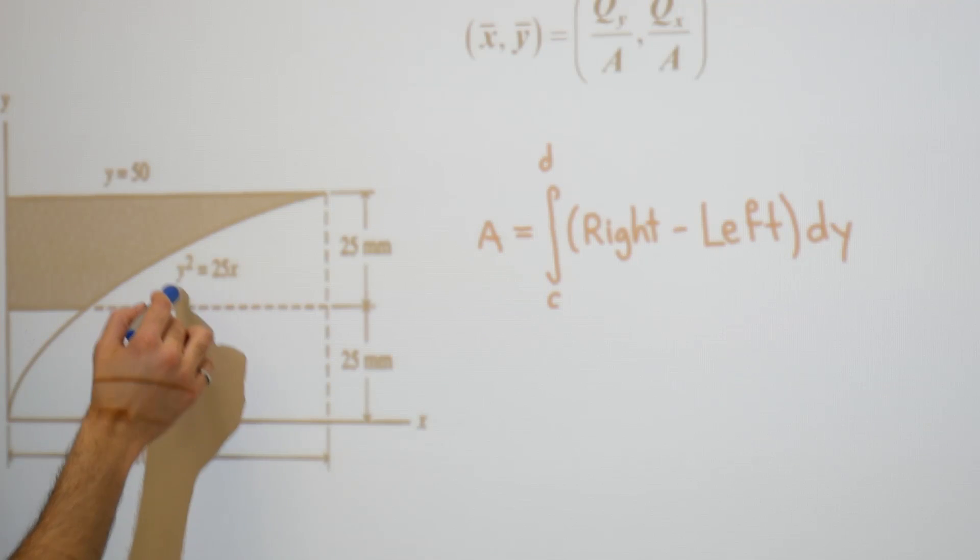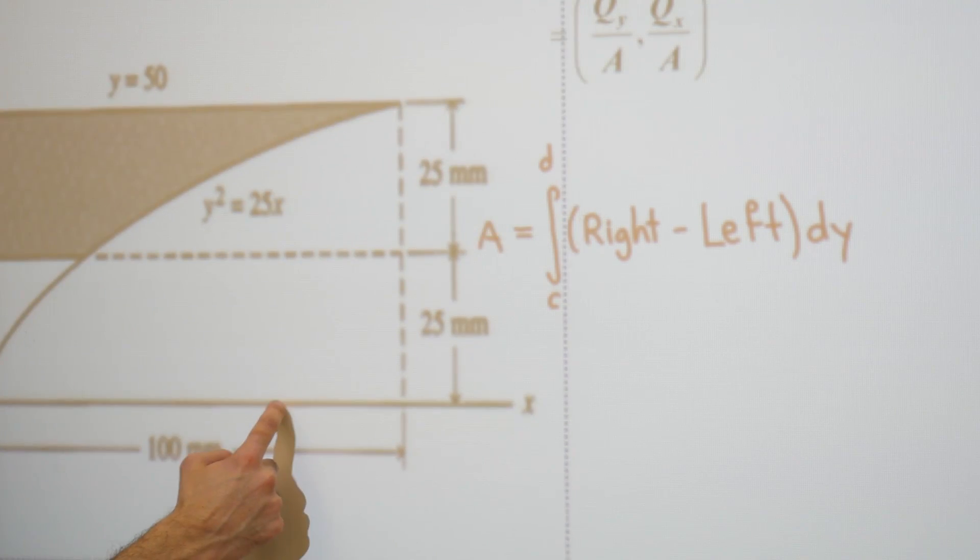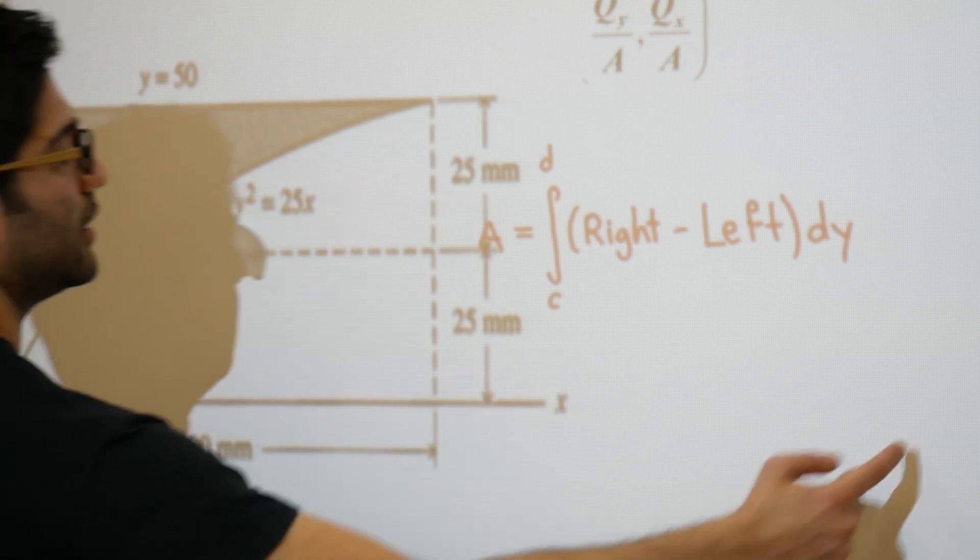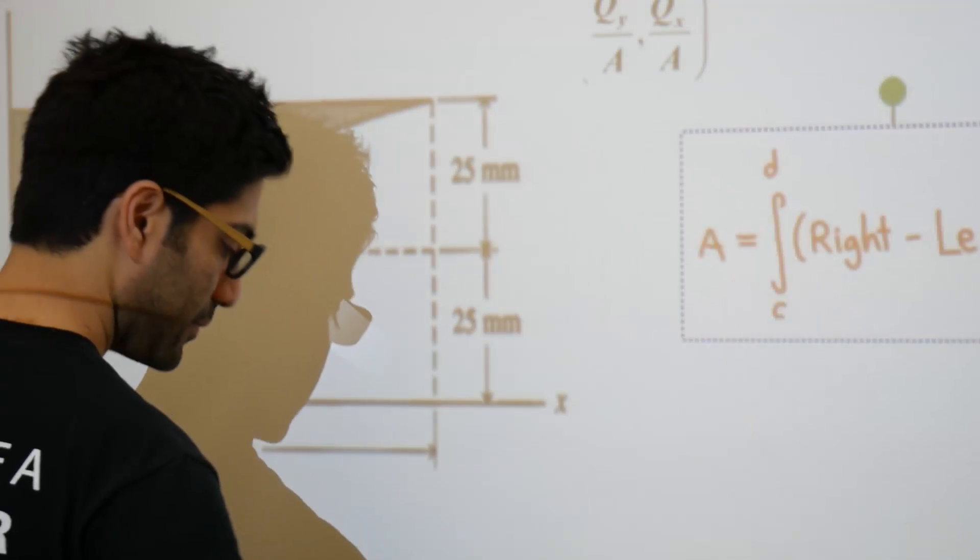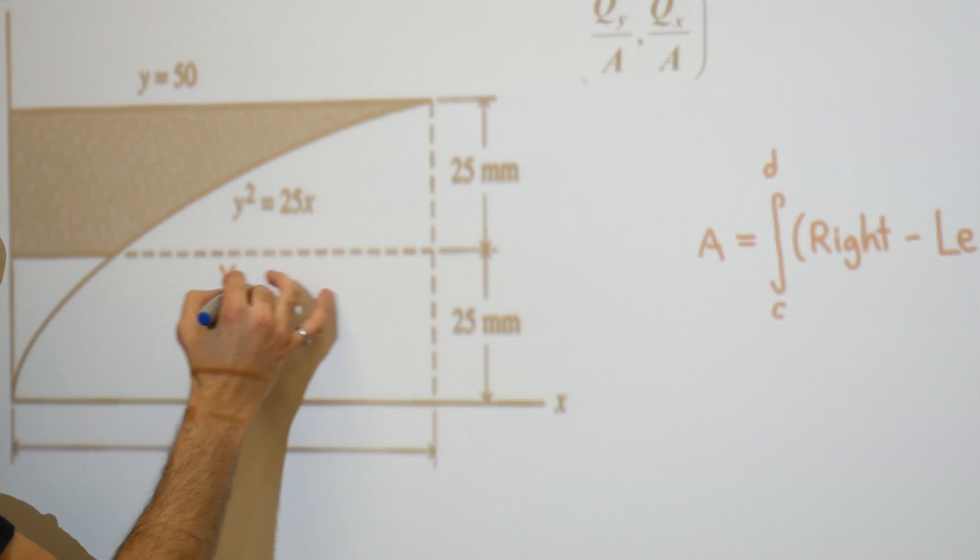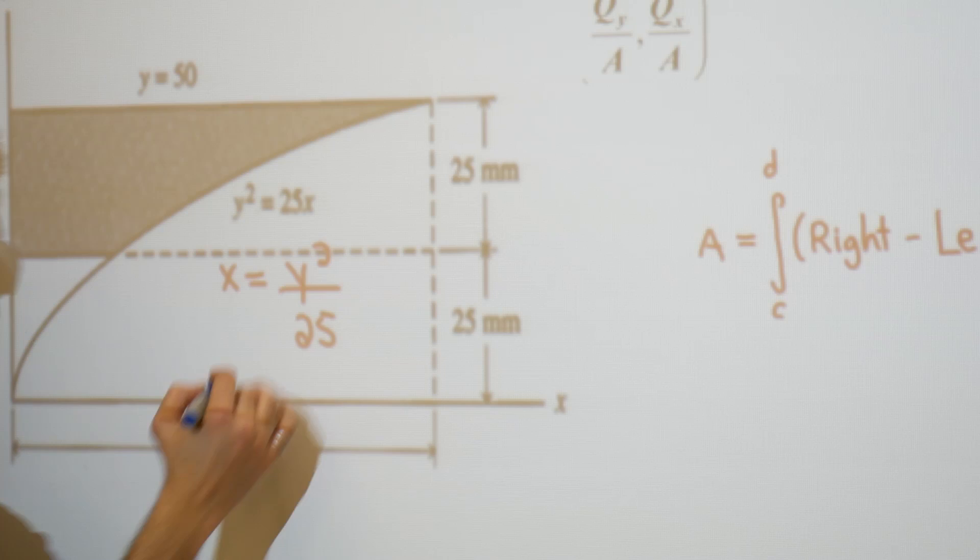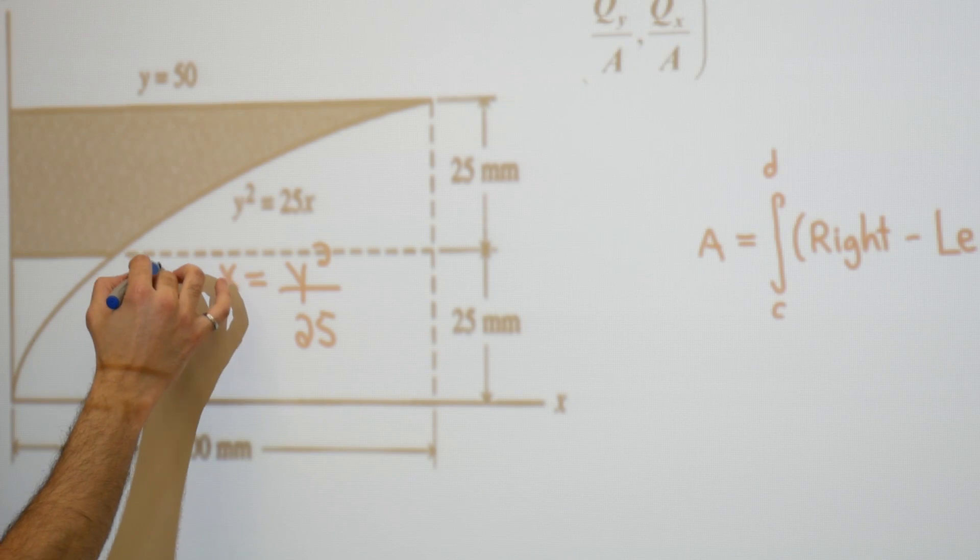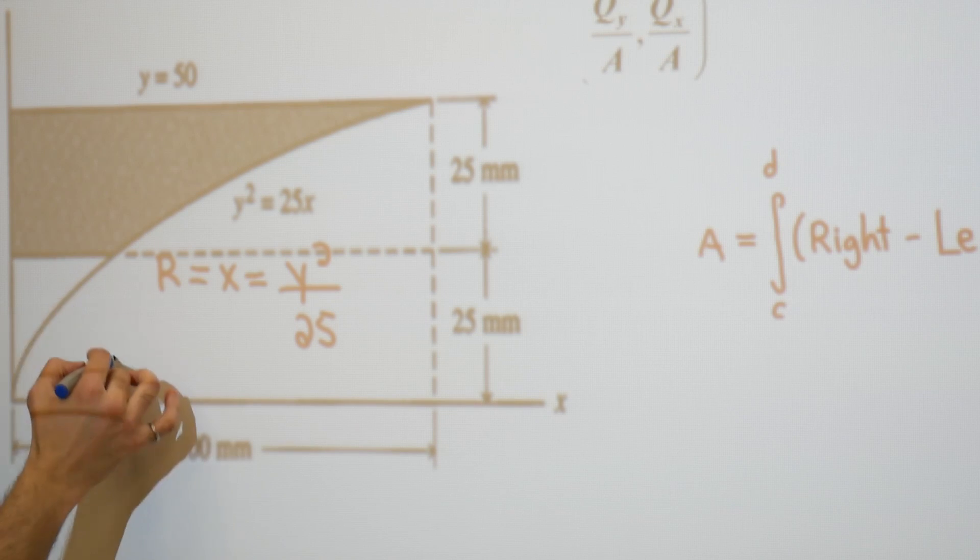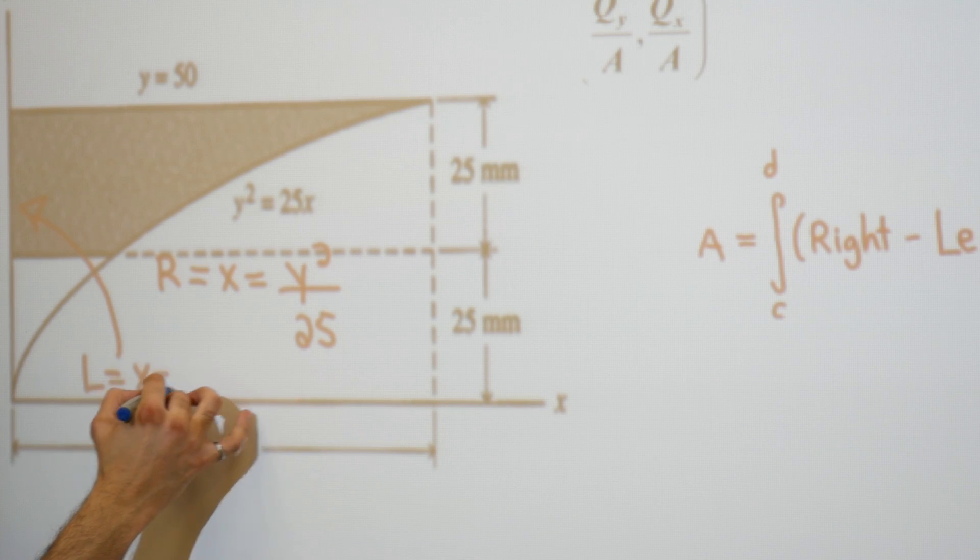In order to solve this problem, I'm going to look at this equation that I have. It's y squared equals 25x. We're going to manipulate this and solve for x. So we're going to see that x is actually equal to y squared over 25, and that will be our right. Our left is right there, and that's simply x equals 0.